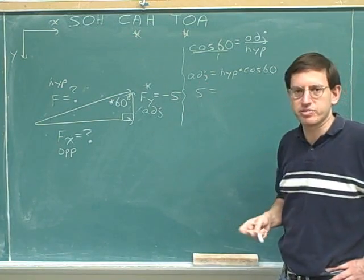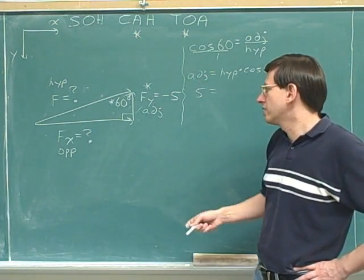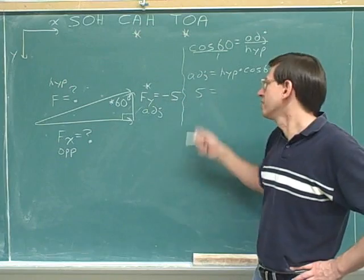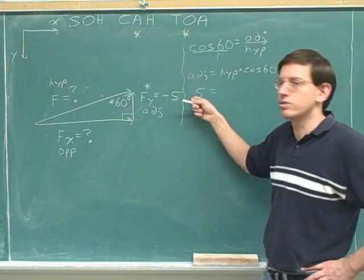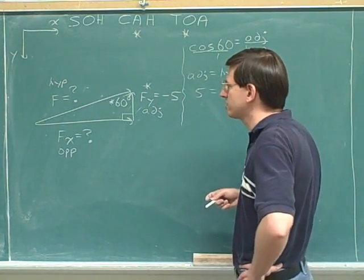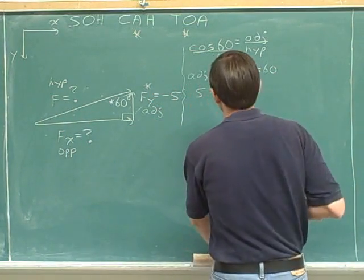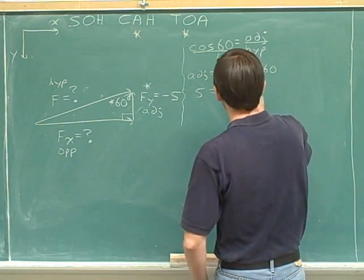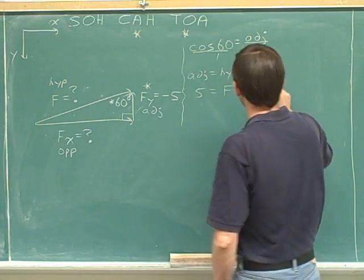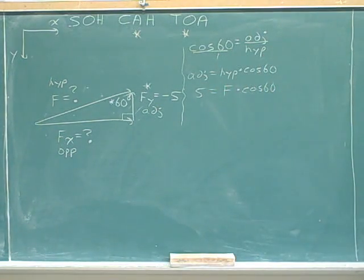Now the adjacent side here is this five. We're not going to plug in negative five, because remember that this here is trigonometry. Geometry refers to lengths, which are always positive. So even though the y component is negative five, when we're working with the trig, we just use the magnitude. Our hypotenuse here is f. We don't know what f is, so we have to plug that in as a variable.